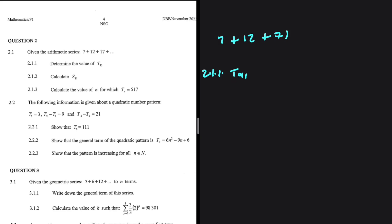We know that for an arithmetic series, Tn equals A plus N minus 1 multiplied by D, where A is the first term, D is the common difference, and N is the position of the term we're interested in.